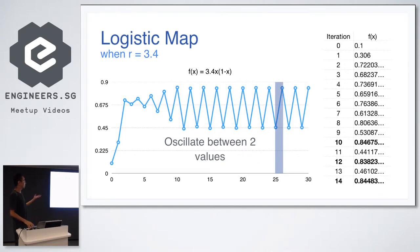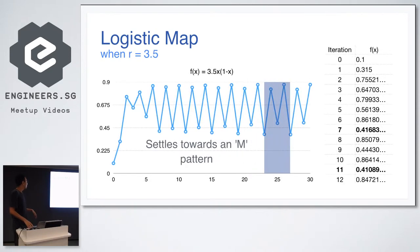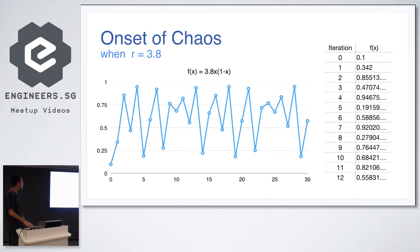Let's increase further to 3.5. And now the pattern gets more interesting. Now it's oscillating among four different values. It settles on an M shape. So it just repeats like a sine curve. It just repeats itself. Still, I would say predictable.